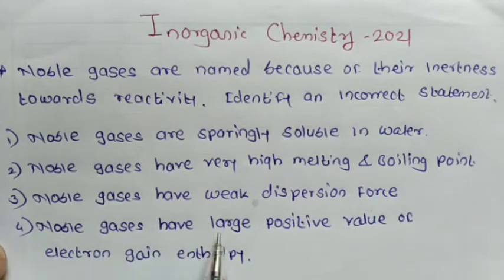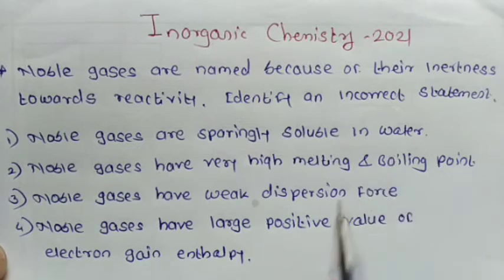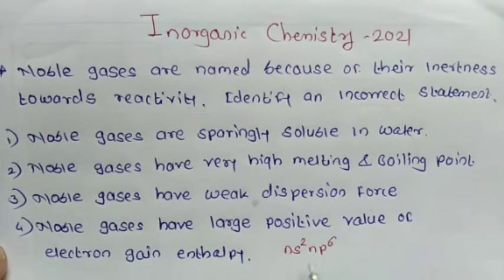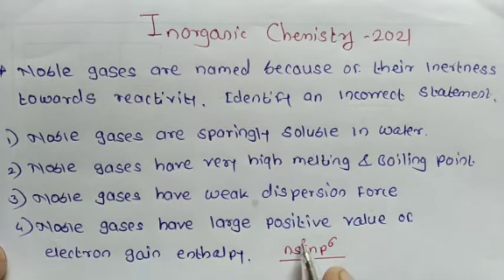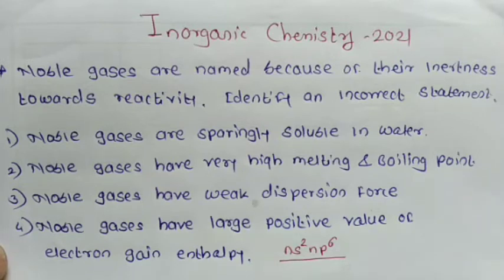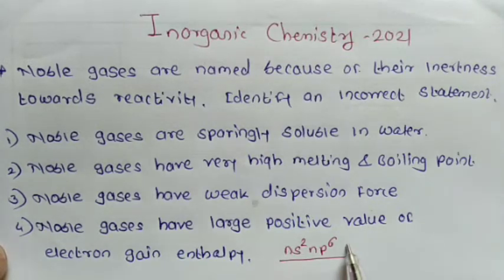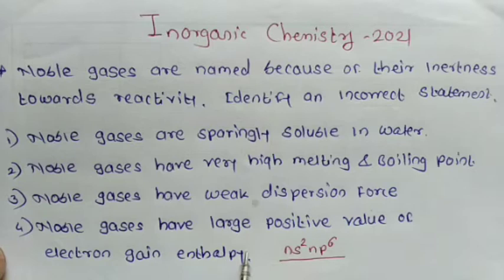The fourth statement — noble gases have a large positive value of electron gain enthalpy — is also correct. The general electronic configuration of group 18 elements is ns2 np6. Noble gases complete their octet with ns2 np6, so they have no tendency to accept an electron. Therefore, they have a large positive value of electron gain enthalpy.